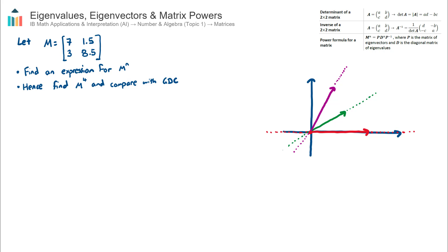Before we get into that, let's just recap on what eigenvalues and eigenvectors mean. They sound a little bit intimidating, but if you think about it from a visual point of view, they're not too bad. I have a diagram here on the right-hand side showing three vectors and their respective span lines: a red vector, a green vector, and a purple vector.